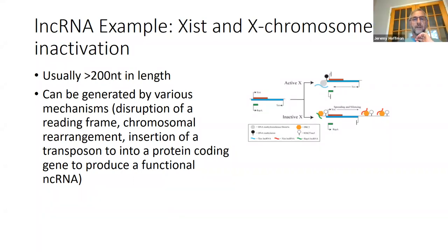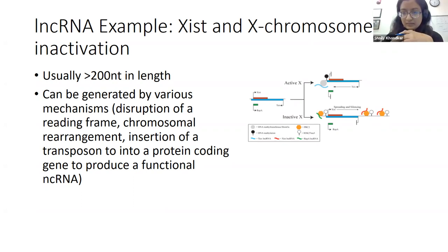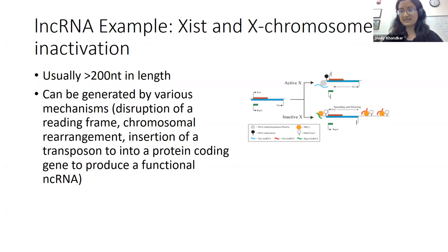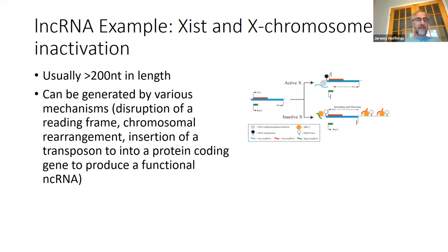To clarify the back and forth: there is another long non-coding RNA called Tsix, and it represses transcription of XIST, which is the long non-coding RNA that inactivates the X chromosome. So essentially, the Tsix long non-coding RNA prevents X inactivation.